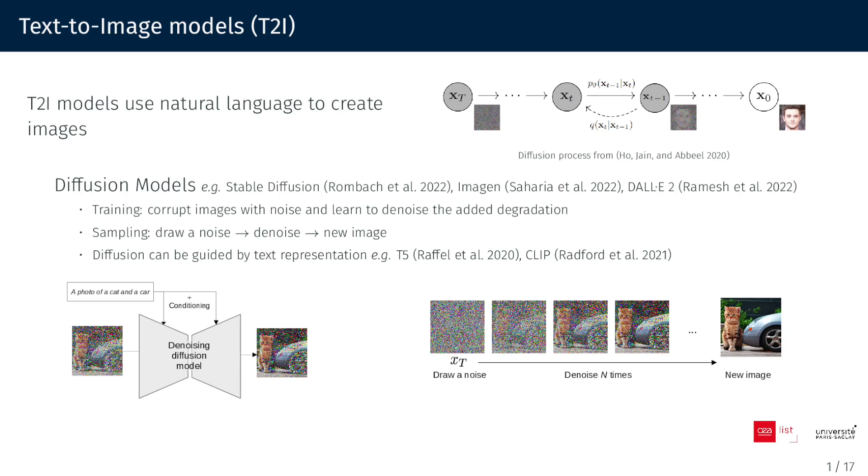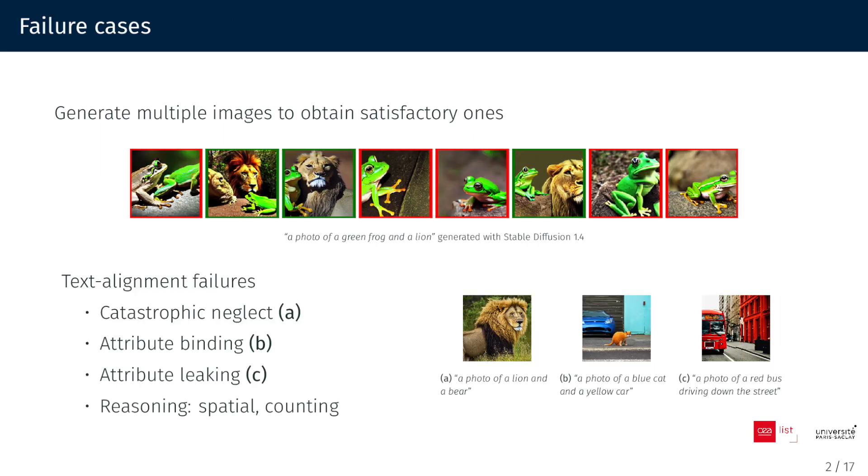We can then generate new images by starting with noise and iteratively denoising until we obtain a new image. Additionally, the diffusion process can be guided by text representation from models like T5 or CLIP. However, we often need to generate multiple images to obtain satisfactory results, because not all of the images reflect the prompt contents.